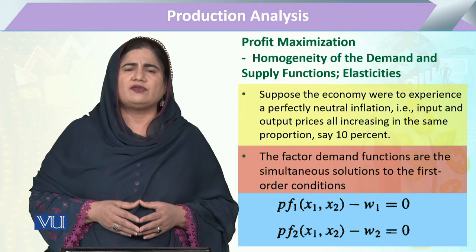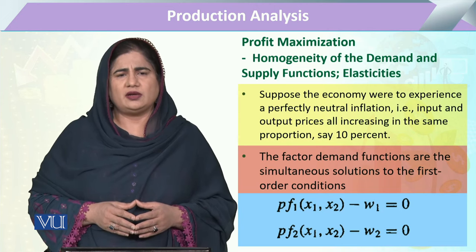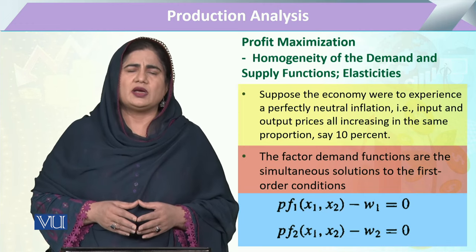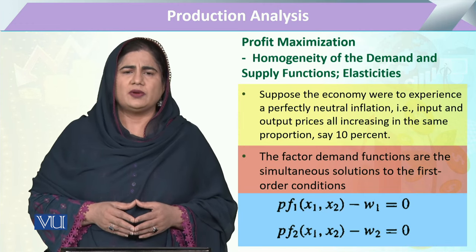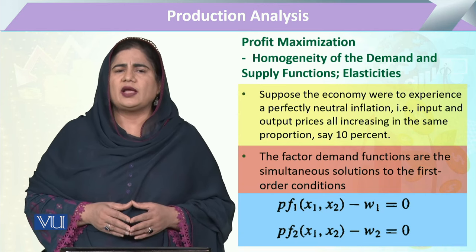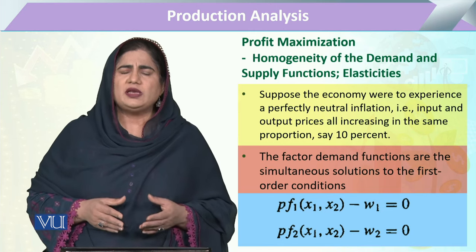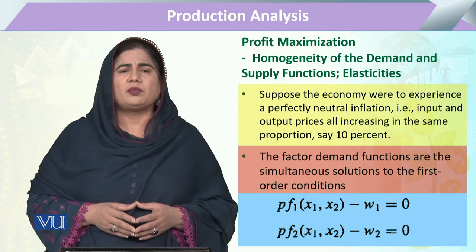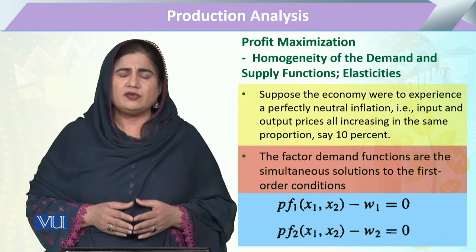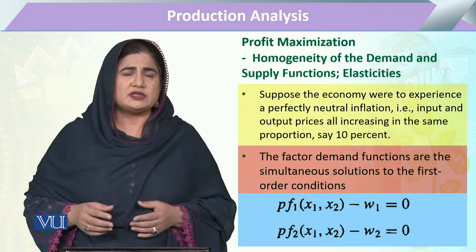Through the first order condition, we can determine the amount of those factors which will be yielding the optimal quantity of output. For that optimal quantity of output, through the Lagrange multiplier, we have derived many times that it is equal to the price of the output multiplied by the first derivative of the output function minus wy, and likewise for the other factor.